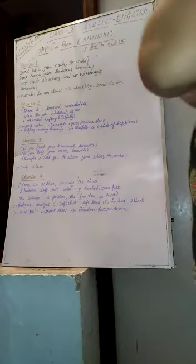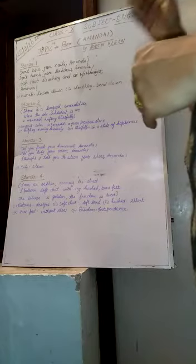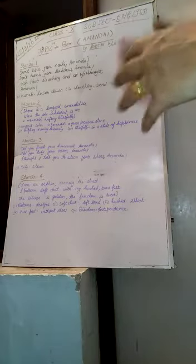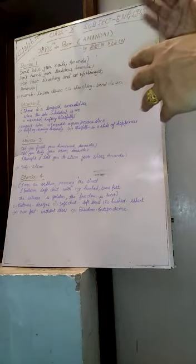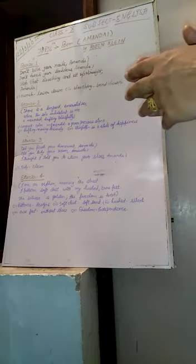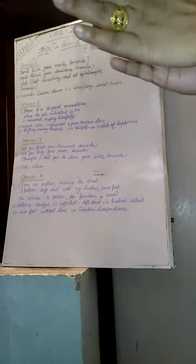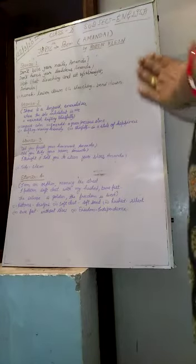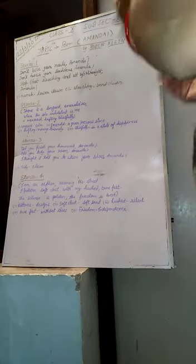They want freedom till a certain period of time in their age. So here you can see: Don't bite your nails, Amanda. Don't hunch your shoulders, Amanda. Stop that slouching and sit up straight. Here, the mother is speaking to Amanda and she is instructing her some things that she should not do.